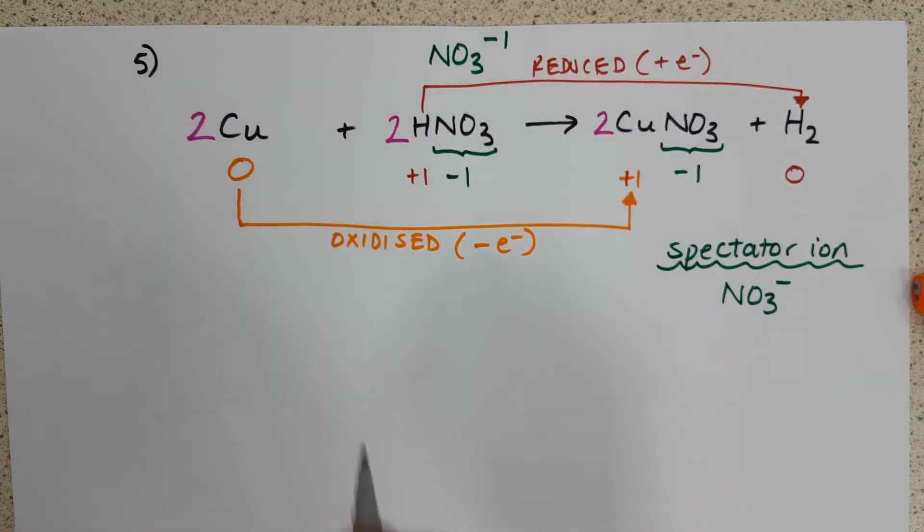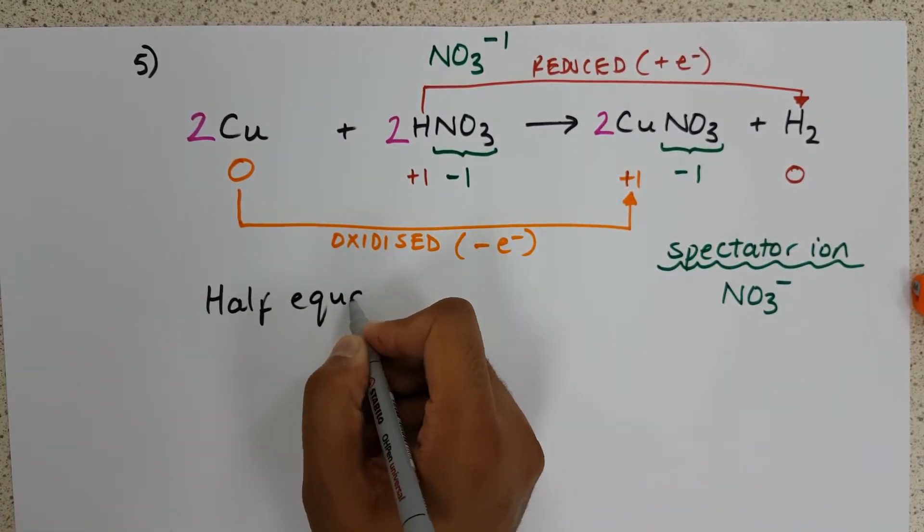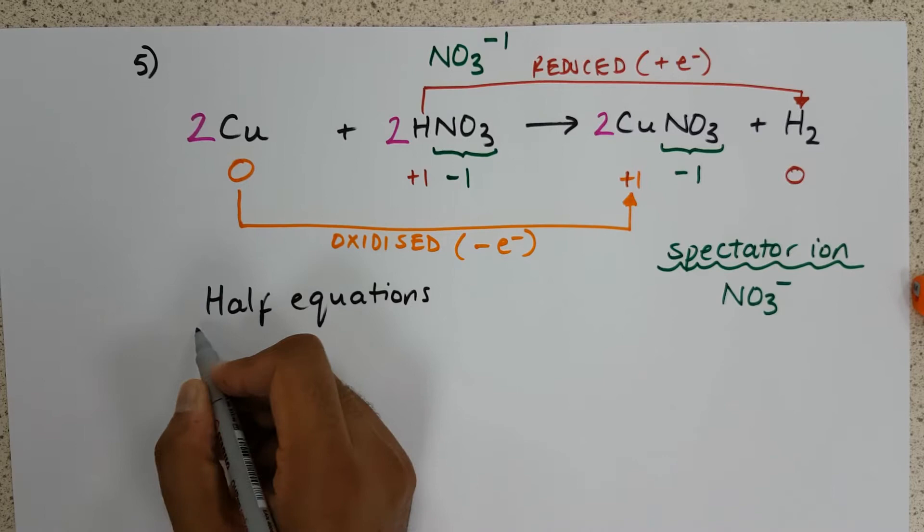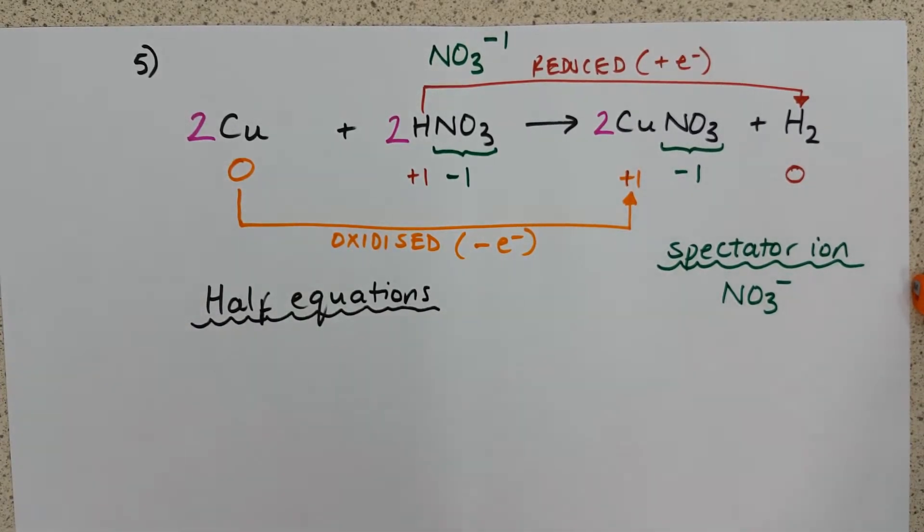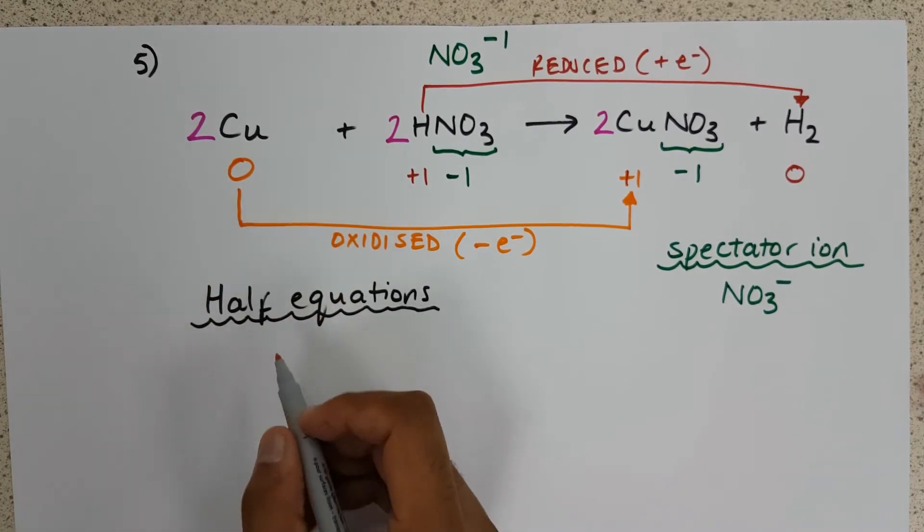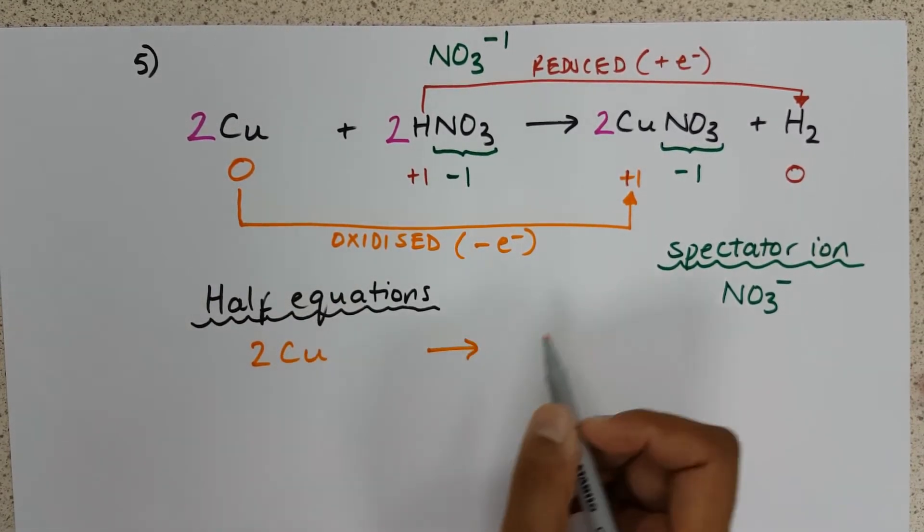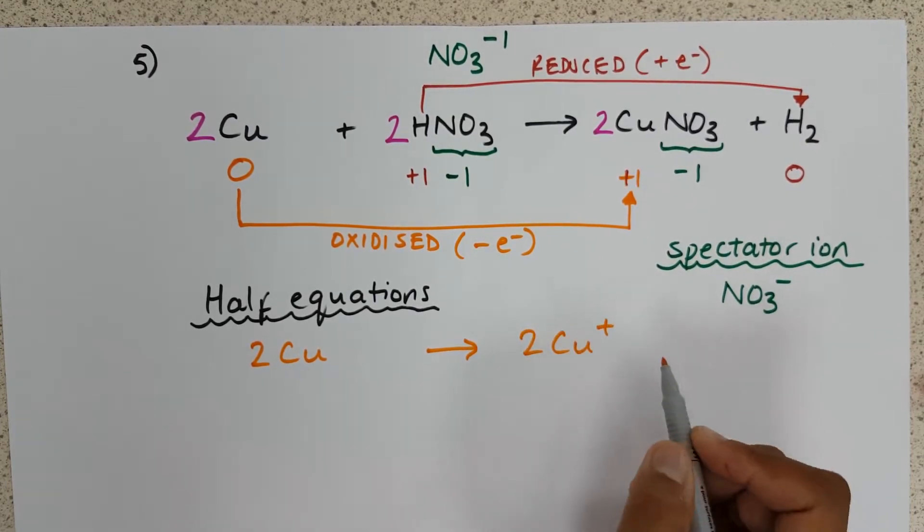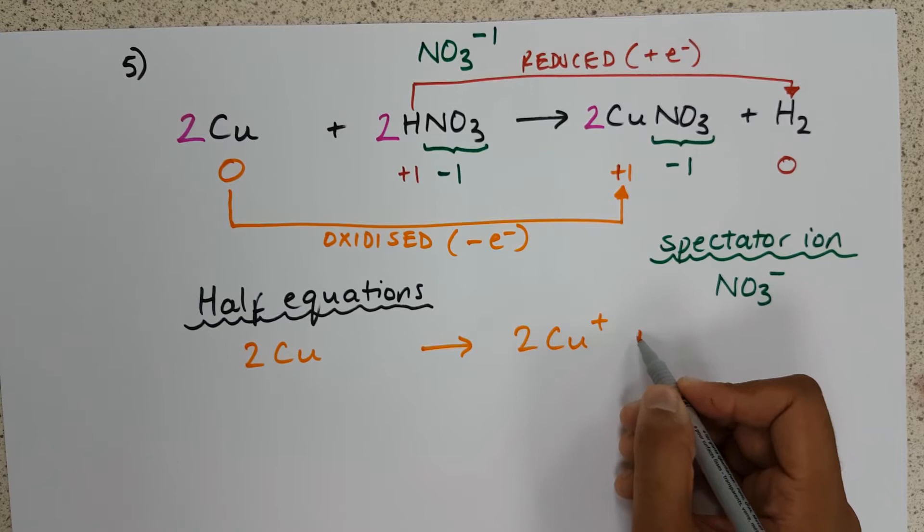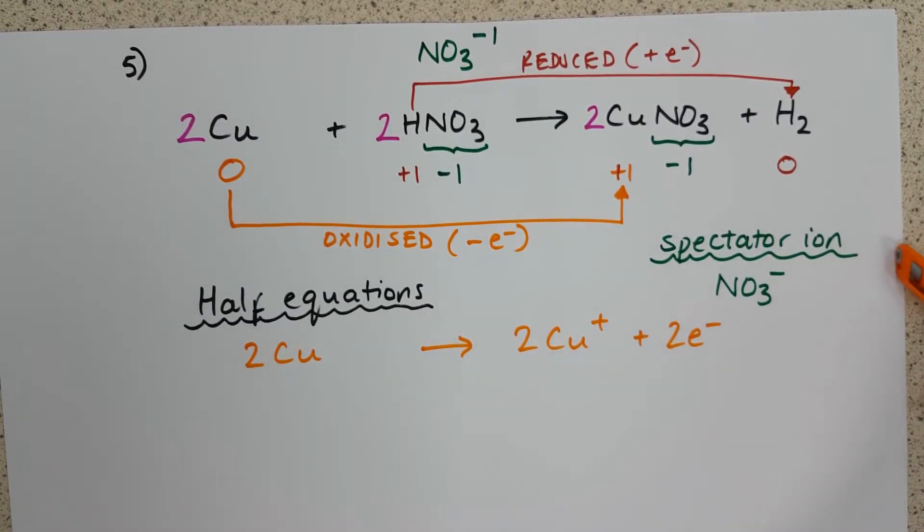If we go forward to our half equations, same as before. If we separate out the two species that are reacting, the copper and the hydrogen, we can start with 2Cu, which forms 2Cu+. And we can add on that we need two electrons altogether for that reaction to occur.